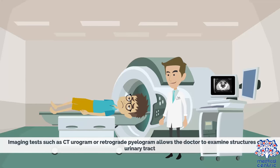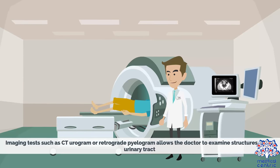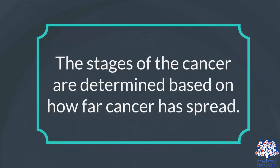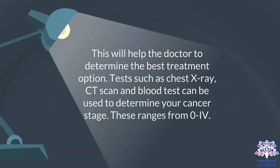Imaging tests such as CT urogram or retrograde pyelogram allow the doctor to examine structures of the urinary tract. Stages of the cancer are determined based on how far the cancer has spread, which helps the doctor determine the best treatment option. Tests such as chest X-ray, CT scan, and blood tests can be used to determine the cancer stage, ranging from 0 to 4.